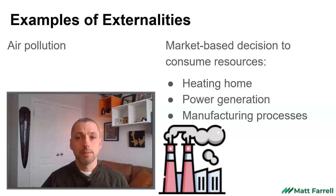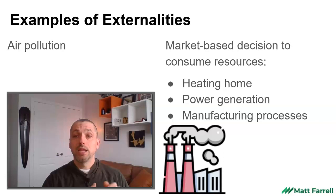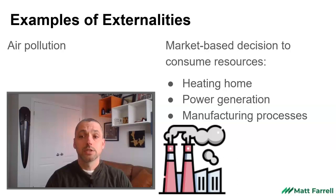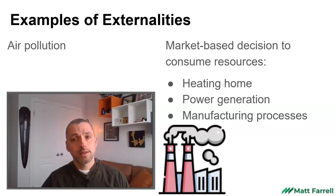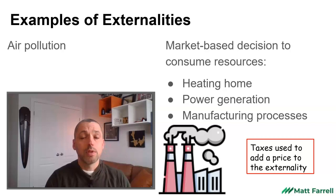Another example would be air pollution. The market-based decision to consume resources is part of home heating, manufacturing processes, the decision to open a firm to manufacture goods and services, and power generation. All those things consume resources but generate an externality: air pollution. Again, this is a type of market failure because there's no price mechanism to account for that externality. Taxes, like a carbon tax, might be used to try to put a price on the externality to reduce the impact on third parties.